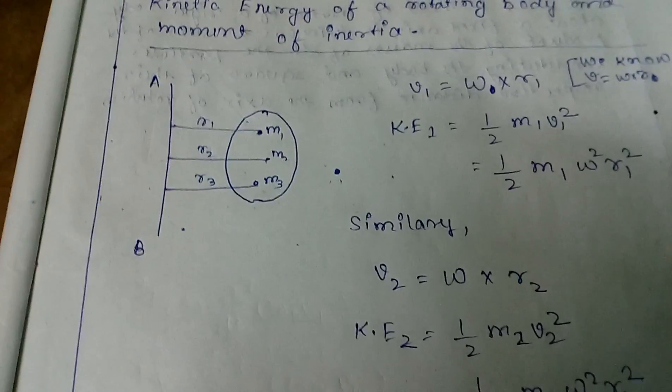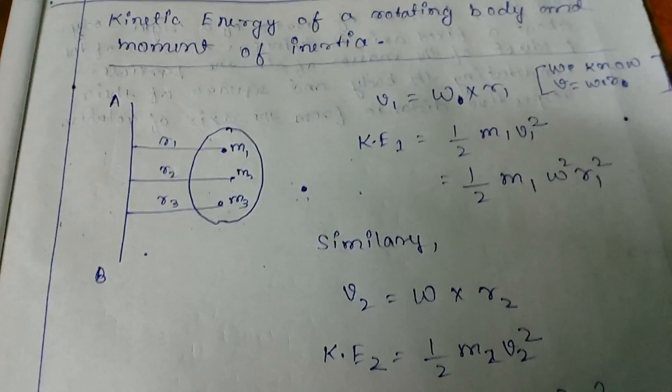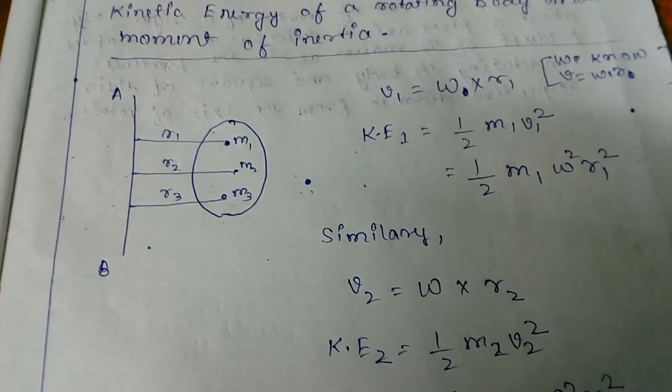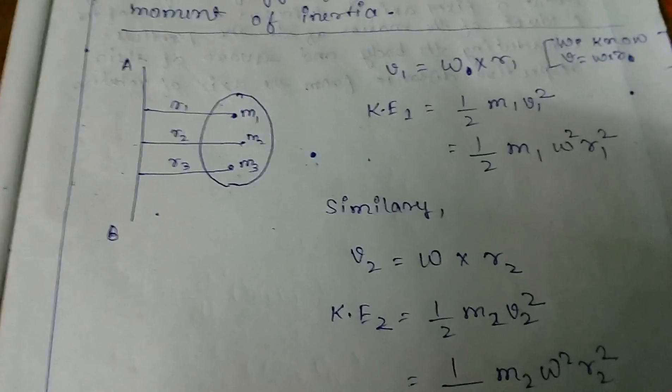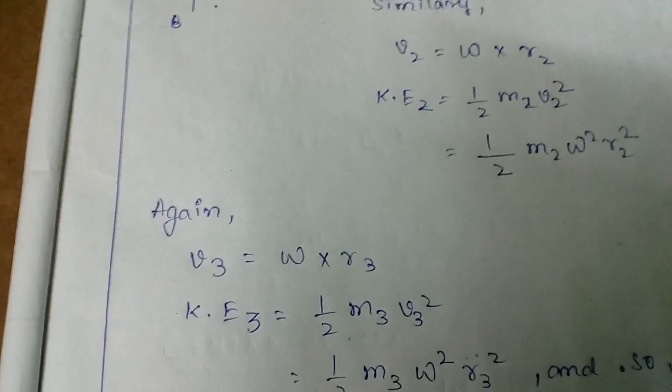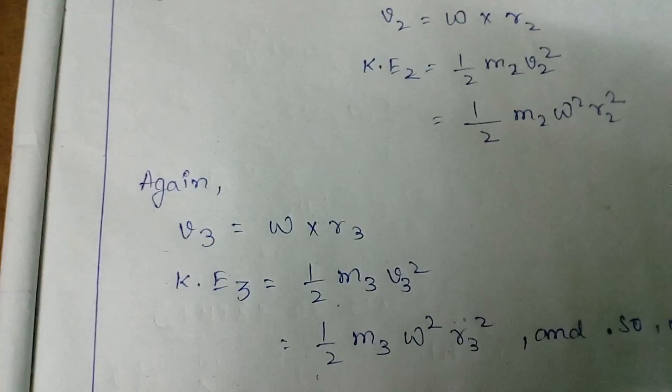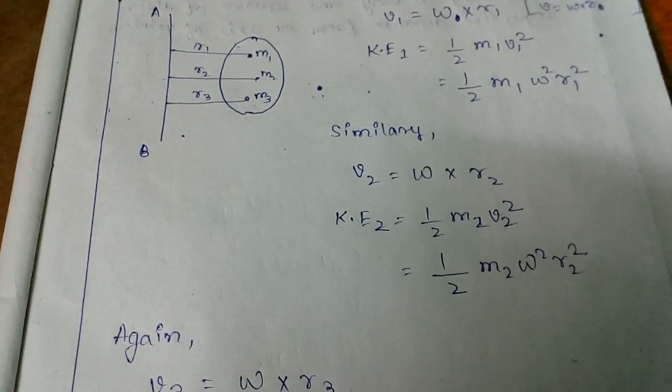Similarly, for particle 2, the velocity of the point mass is v2 equals omega into r2. So the kinetic energy of point mass 2 is similarly half m2 v2 square, so we get half m2 omega square r2 square. Again for v3, similarly half m3 omega square r3 square, and so on, and so on.